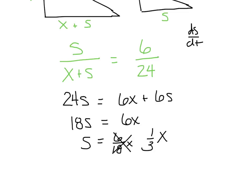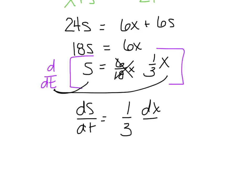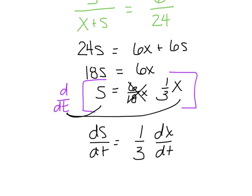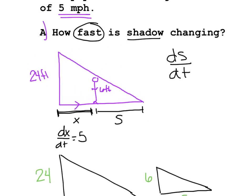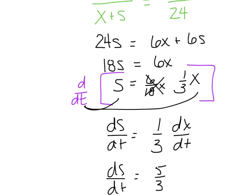Notice you haven't done any calculus yet — we simply wrote a proportion from geometry and solved. Now I'll bracket that in and take its derivative with respect to time. Variables don't match, so ds/dt equals one-third times dx/dt. We know dx/dt is positive 5, so ds/dt equals 5/3 feet per hour.